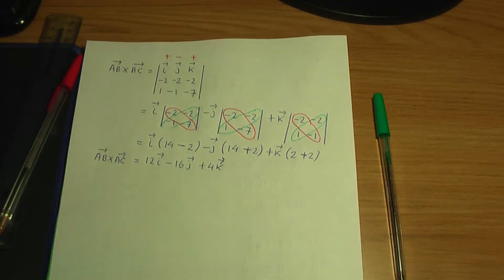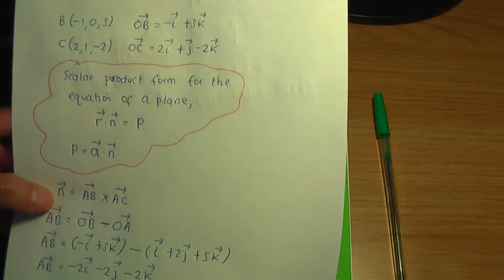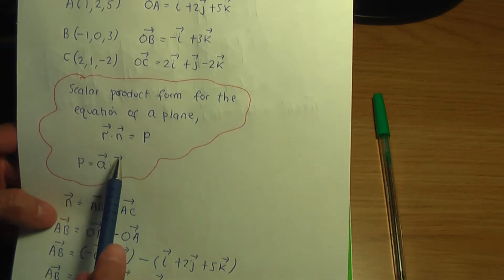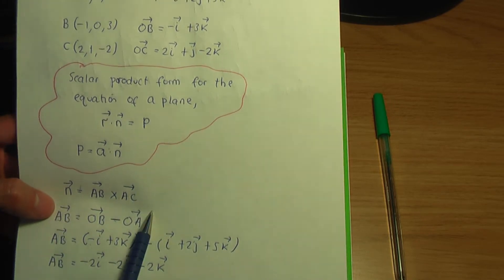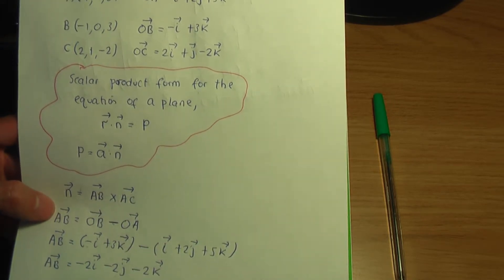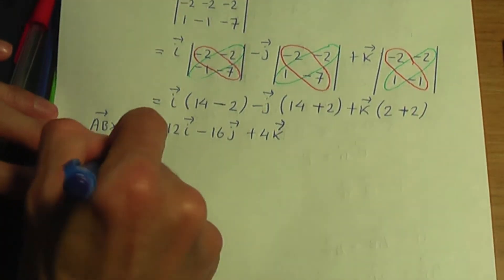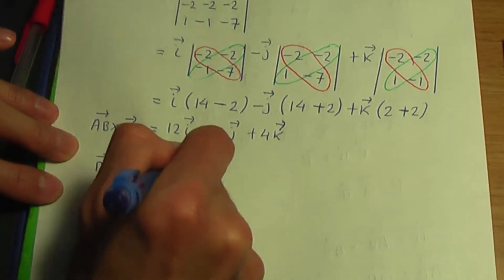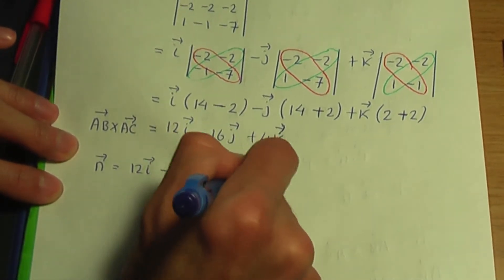AB × AC gives us the normal vector for this plane. So the normal vector N = 12i − 16j + 4k.